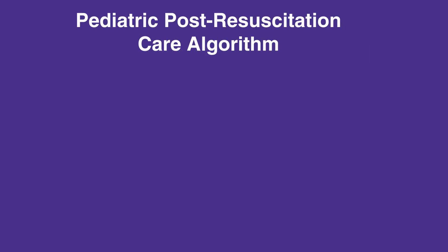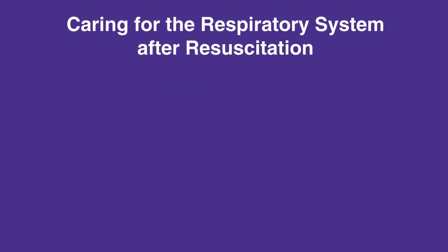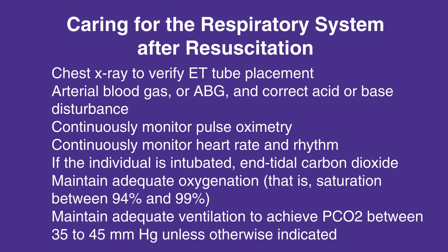For the pediatric post-resuscitation care algorithm to guide you in your treatment, refer to figure 17 in your corresponding PALS manual. When caring for the respiratory system after resuscitation, follow this checklist: chest x-ray to verify ET tube placement; arterial blood gas, or ABG, and correct acid or base disturbances; continuously monitor pulse oximetry.